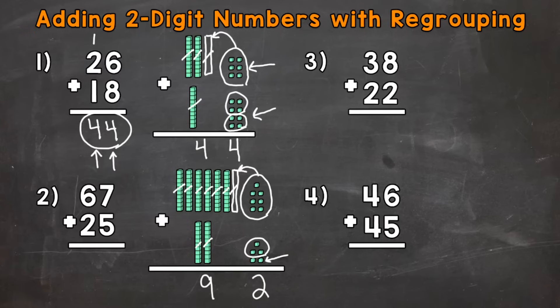Let's do it without the base 10 blocks. So 7 plus 5 is 12. So we put the 2 in the ones place and regroup the one group of 10 from 12 in the tens place. So now we have 1 ten plus 6 tens plus 2 tens. 1 plus 6 is 7 tens plus 2 tens is 9 tens.